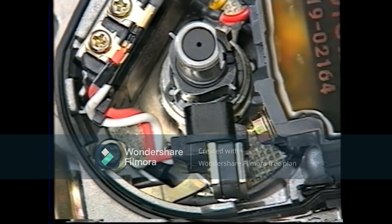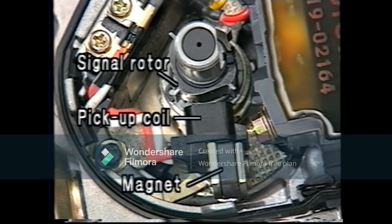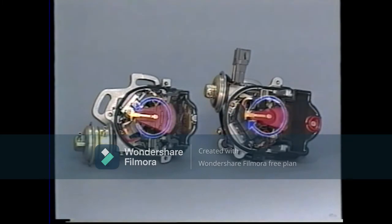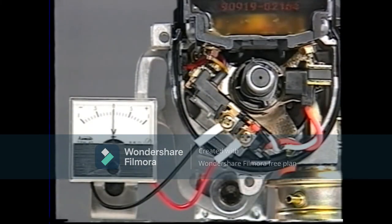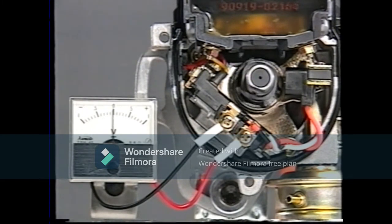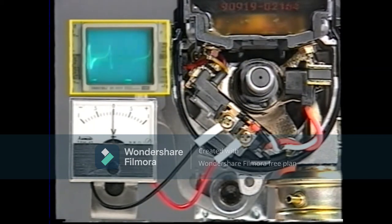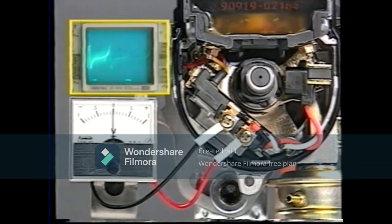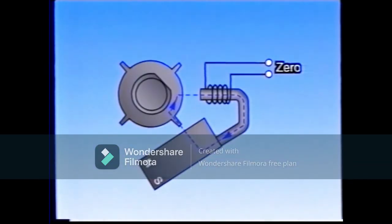The signal generator has three components: a signal rotor, which makes one turn for every two revolutions of the crankshaft; a pickup coil; and a permanent magnet. The rotor turns clockwise or counterclockwise depending on the engine. As the rotor turns, a voltage is generated in the pickup coil — this is the ignition signal. The magnetic flux of the permanent magnet flows through the signal rotor, the pickup coil, the bracket, and returns to the magnet. When the rotor is still, there is no change in the magnetic flux.